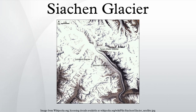At 76 km long, it is the longest glacier in the Karakoram and second longest in the world's non-polar areas. It falls from an altitude of 5,753 m above sea level at its head at Indira Col on the China border, down to 3,620 m at its terminus. The Siachen Glacier lies immediately south of the great watershed that separates the Eurasian Plate from the Indian subcontinent, in the extensively glaciated portion of the Karakoram, sometimes called the Third Pole.